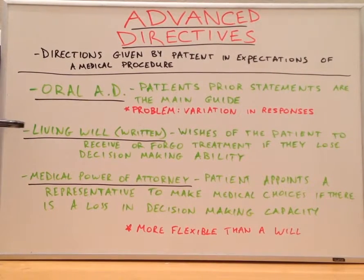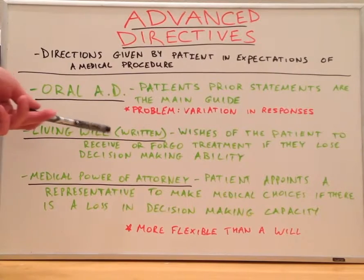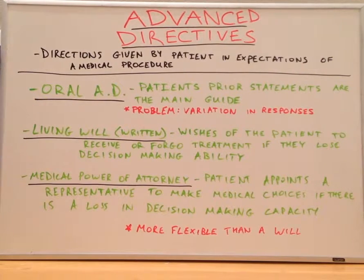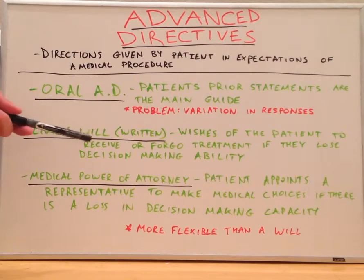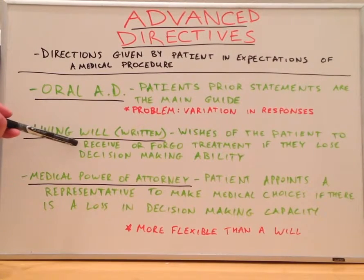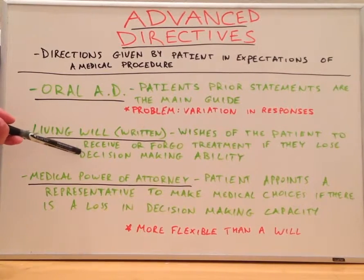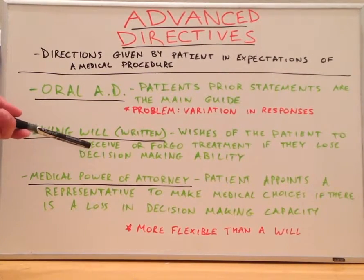Then we have the living will, or the written advanced directive. These are the wishes of the patient to receive or forego treatment if they lose the decision-making ability.